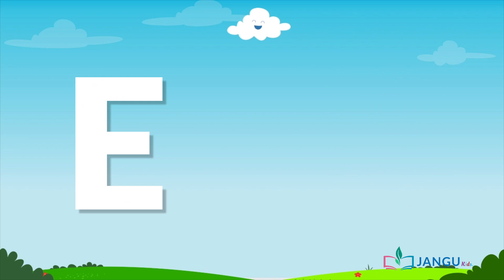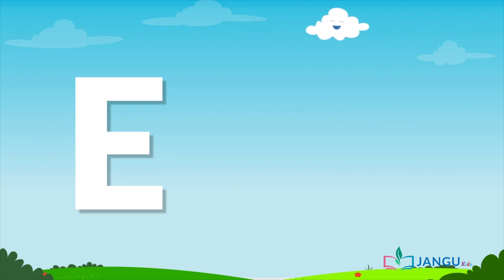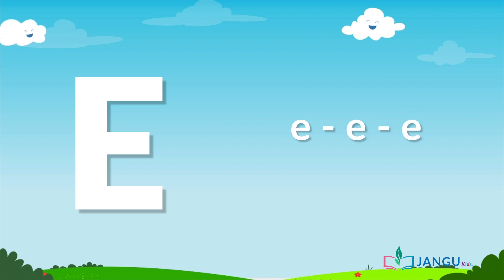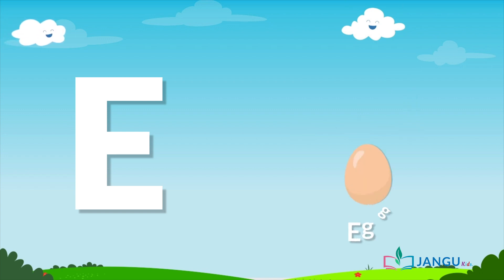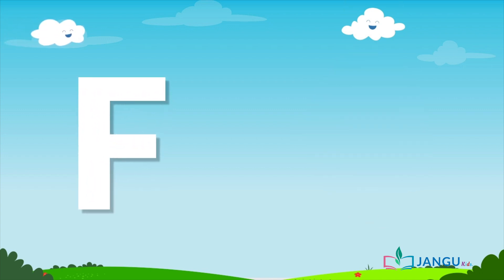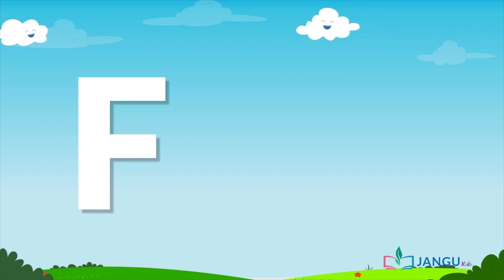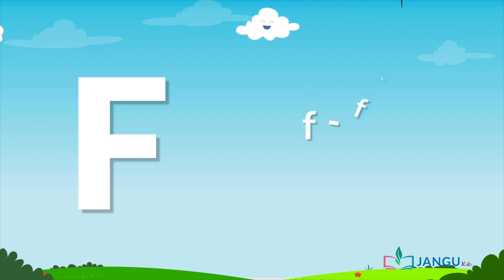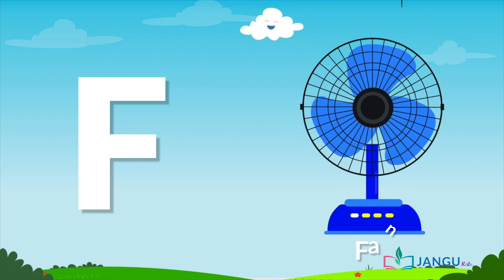E is pronounced as 'E' — E, E, E, E. Say after me: E, E, E, E. As in egg. F is pronounced as 'F' — F, F, F, F. Say after me: F, F, F, F. As in fan.